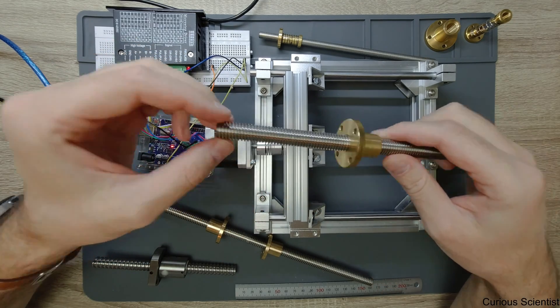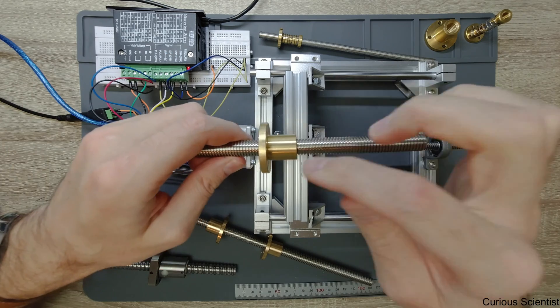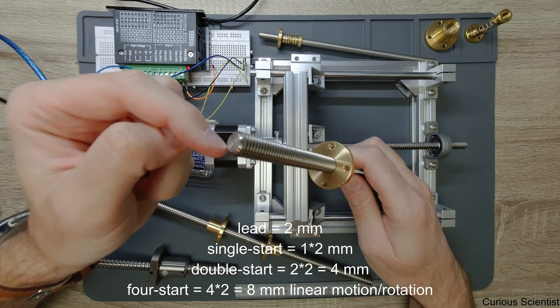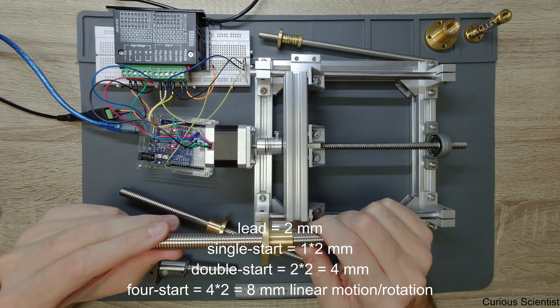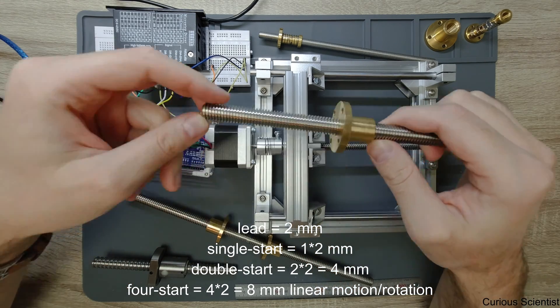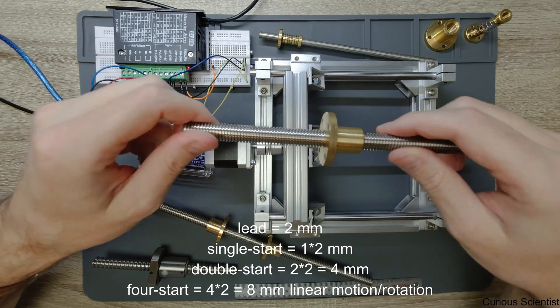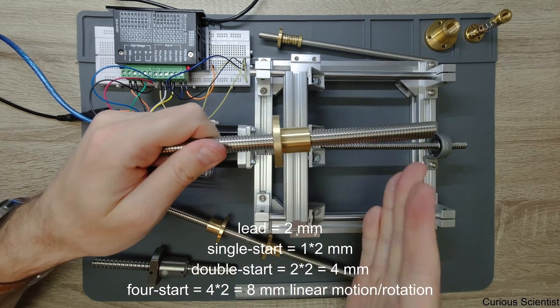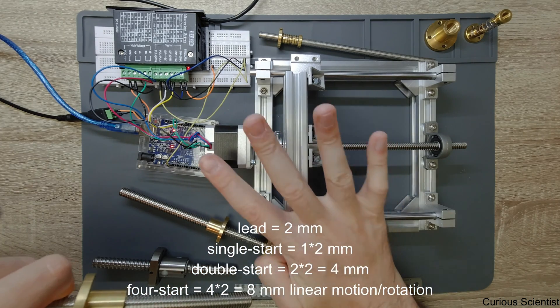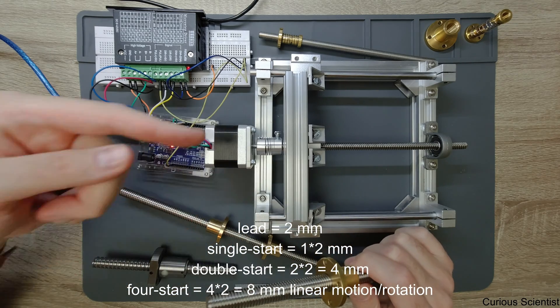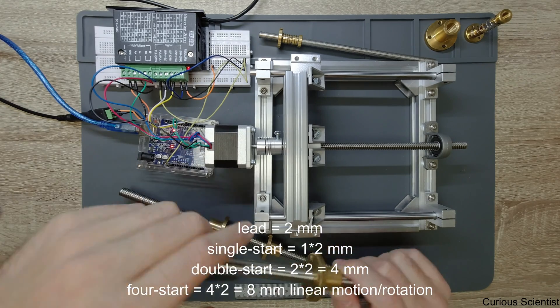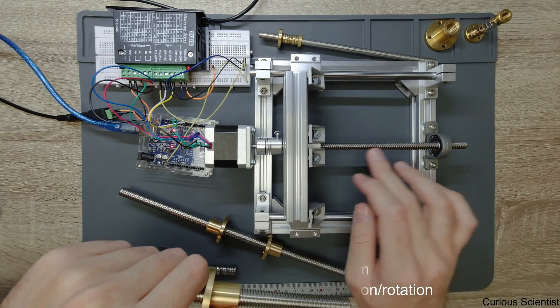If the lead is two millimeters, then one rotation will move the nut by two millimeters. If you have two starts, so basically there are two starts in the thread, then you move twice the time of the lead. That means one rotation will result in four millimeters linear motion. In the case of this, we have four starts, which means you do one rotation with the motor and this will move eight millimeters.